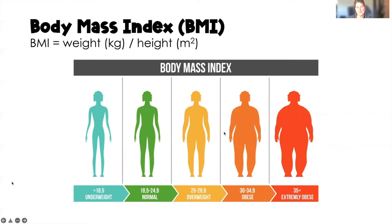We can't get out of a conversation about nutritional assessment without talking about BMI. You need to know how to calculate it. You can use weight in kilograms divided by height in meters squared, or you can take the number 703 and multiply it by the weight in pounds, then divide by the height in inches squared. So you have two options depending on whether you want to work with kilograms and meters or pounds and inches.